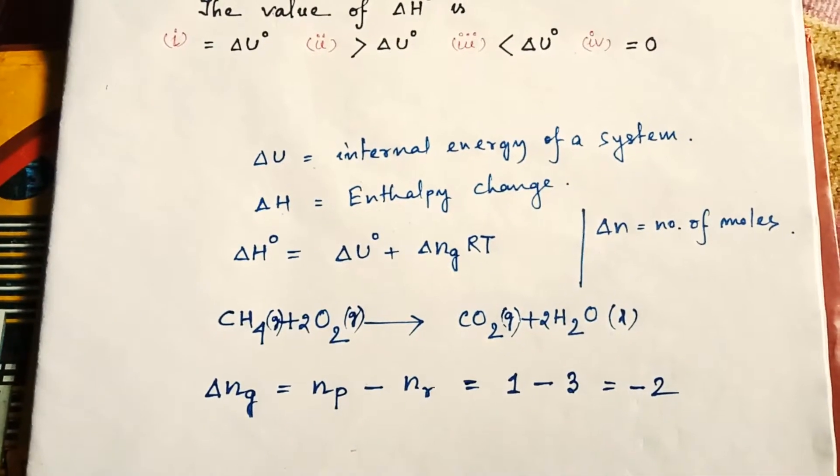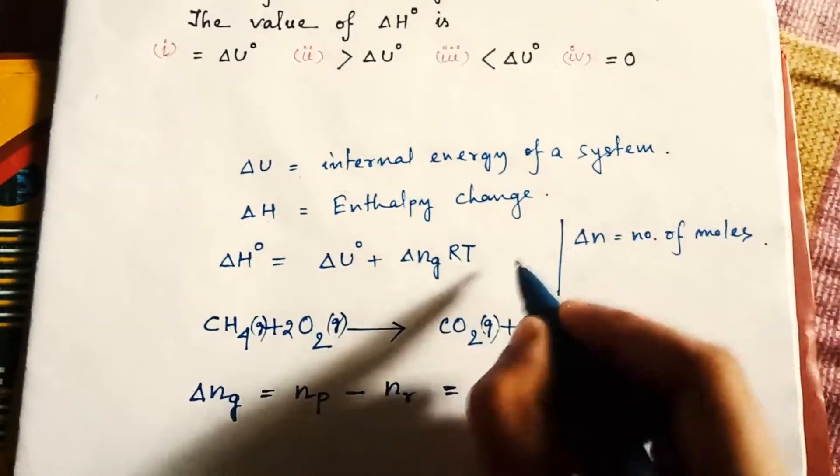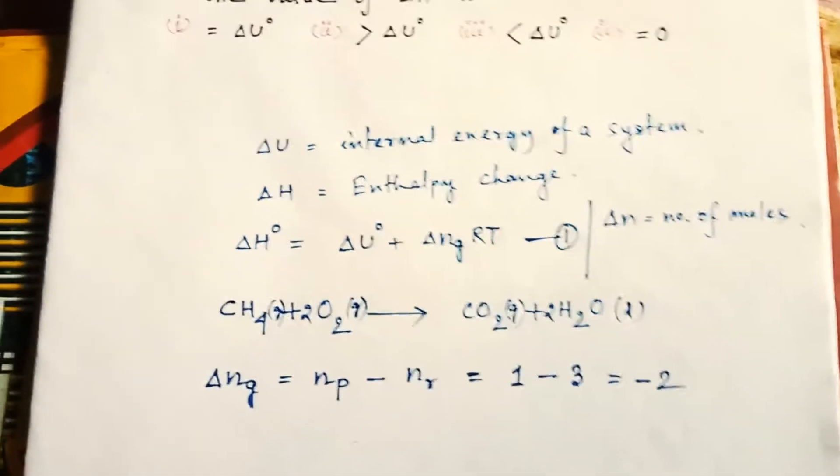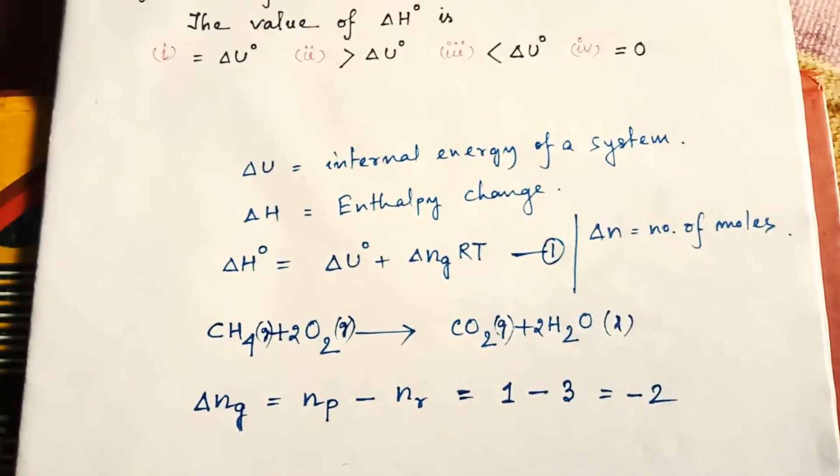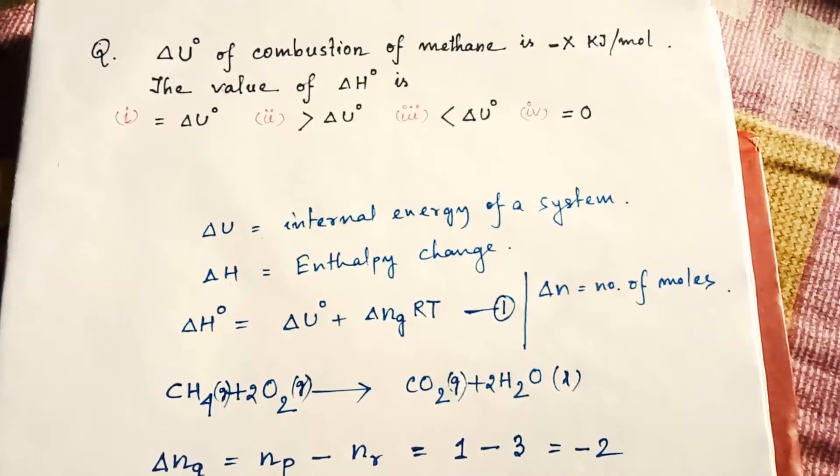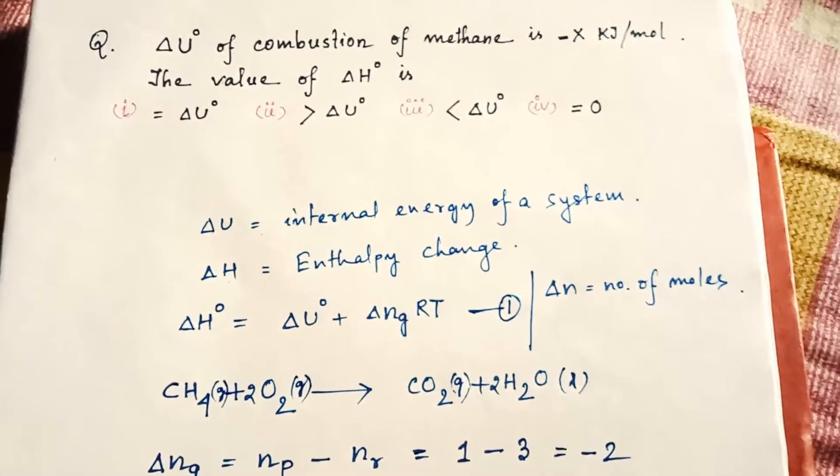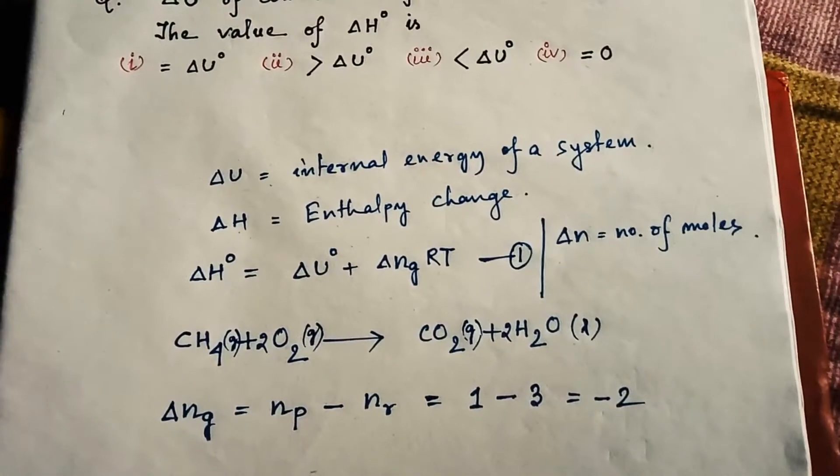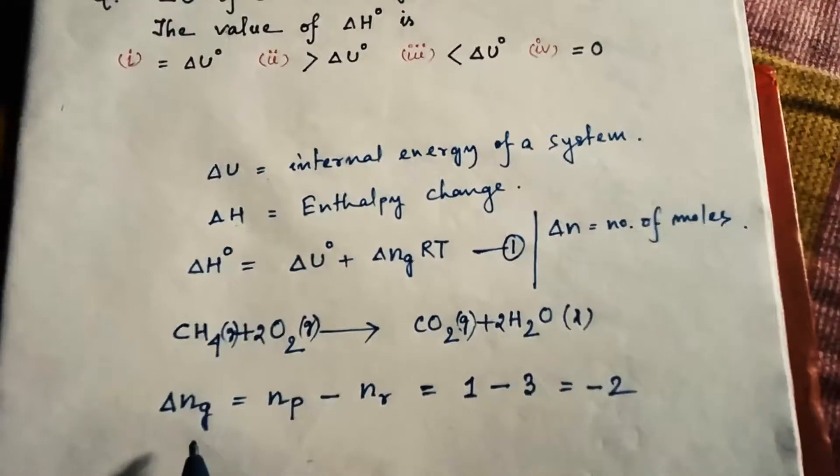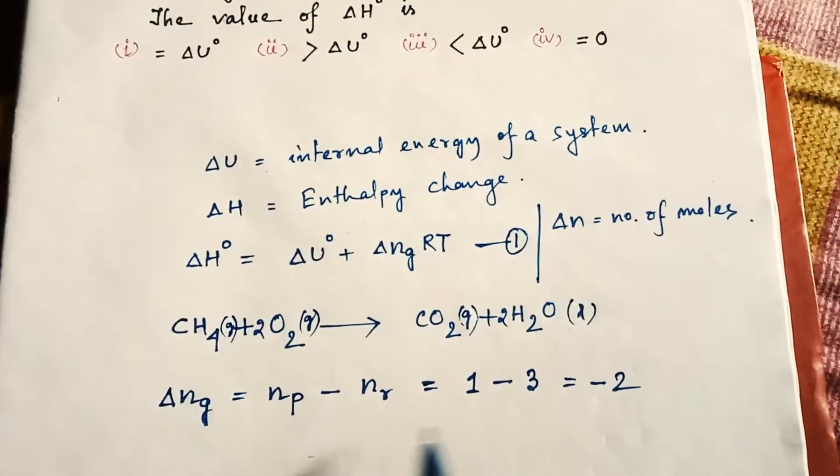Now give a number of this equation. Now put these values on equation one. In the question the ΔU value is given minus X, and from this Δng equation we have got minus two value.